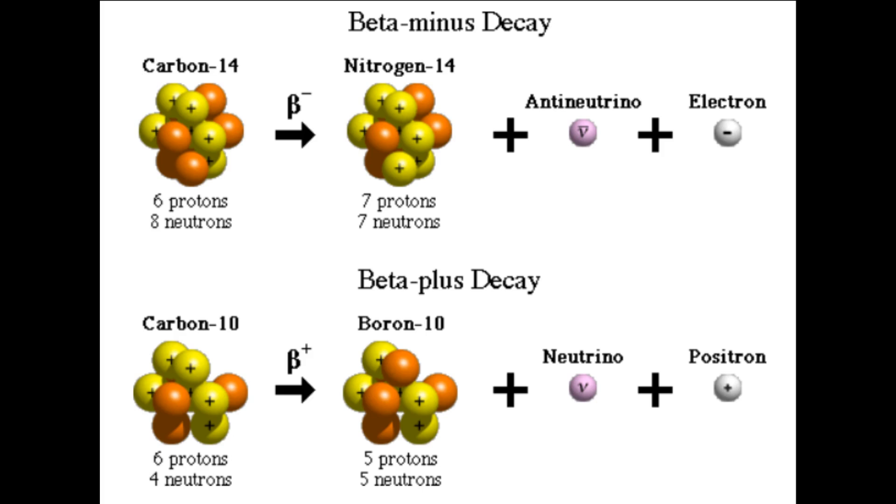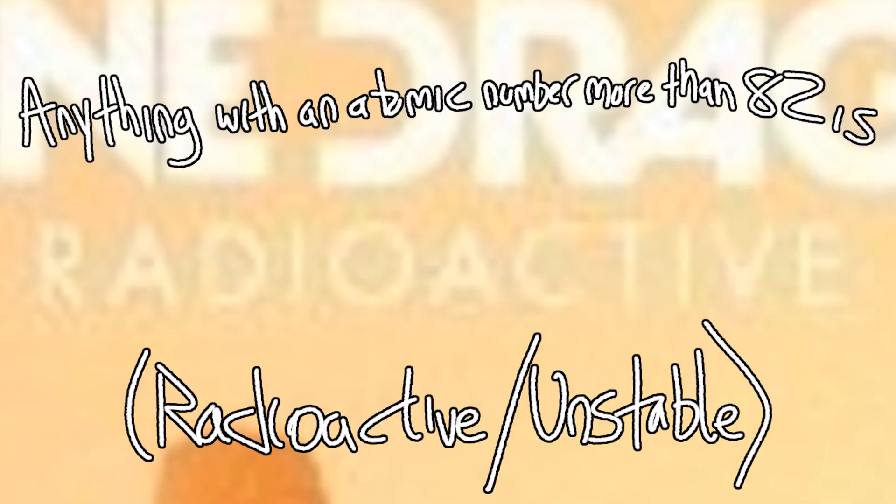There's a point though that really big elements have no stable isotopes. Lead is number 82, but once you get past that, every element has some level of radioactivity. This is a real problem for a dream of a useful super element, unless we're okay with it being radioactive. Well, it gets worse.